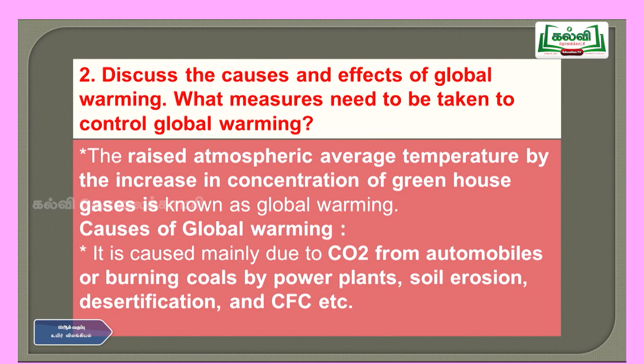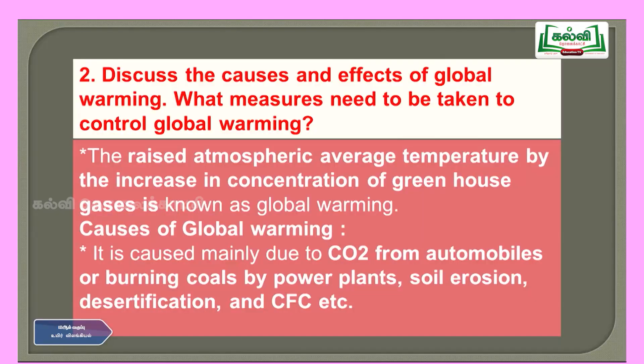The second question: discuss the causes and effects of global warming and what measures need to be taken to control global warming. Global warming is caused by an increase in the atmospheric average temperature due to an increase in the concentration of greenhouse gases. Causes of global warming include carbon dioxide from automobiles or burning coal by power plants, soil erosion and desertification, and chlorofluorocarbon (CFC).